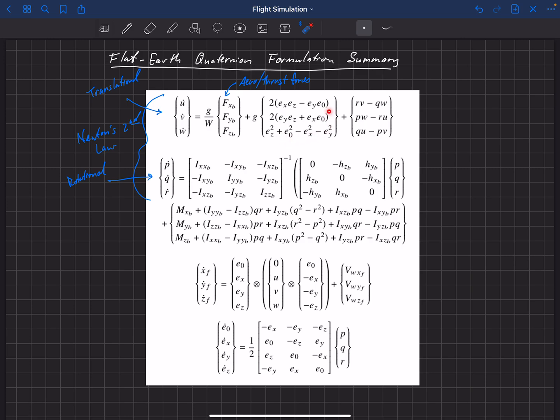So this is aero slash thrust forces. And then this next set is actually our gravity vector. Our gravity vector is a body force that depends on our orientation.